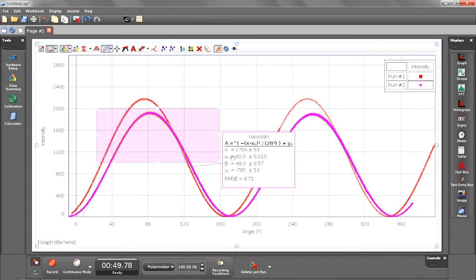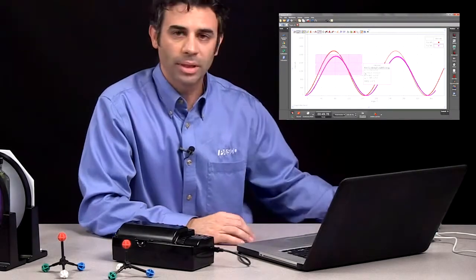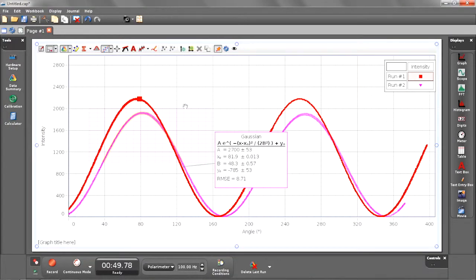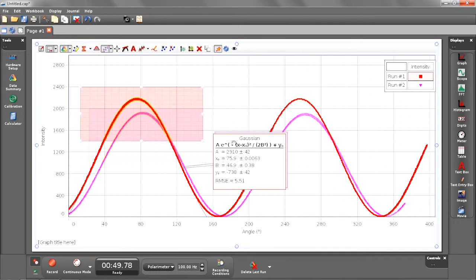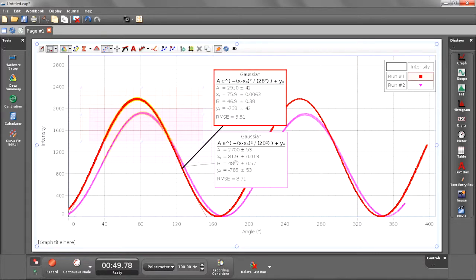And this x0 is my angle at the highest intensity for that particular set of data. Now I'm going to do the same thing with my first run, which was the blank, which was water. I'm going to highlight some data. I'm going to turn on my fit again.